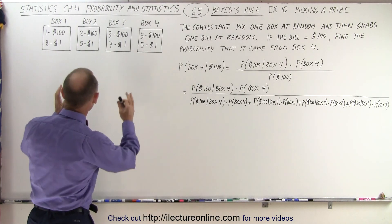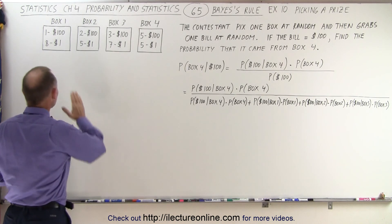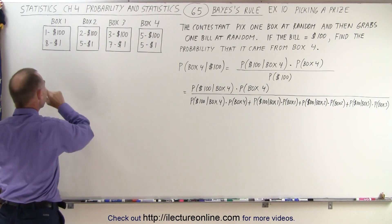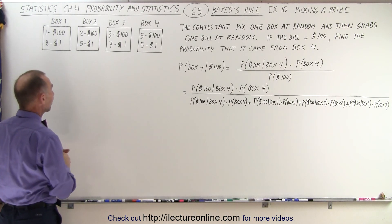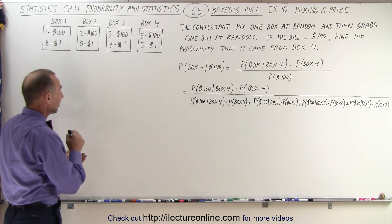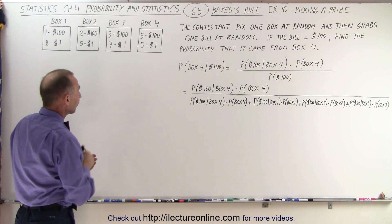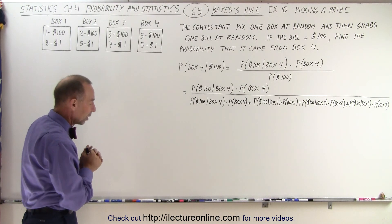Let's say that we have four boxes. We can't see what's inside of them, but there's some cash money in there. In the first box we have one $100 bill and eight $1 bills. On the second box we have two $100 bills and five $1 bills. The third one we have three $100 bills and seven $1 bills. And on the fourth box we have five $100 bills and five $1 bills.